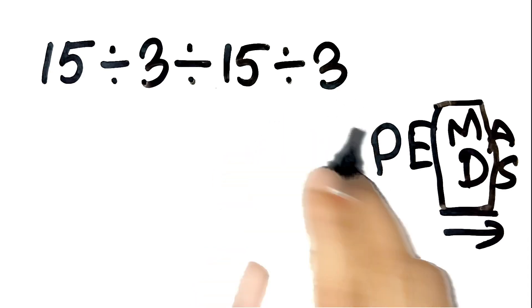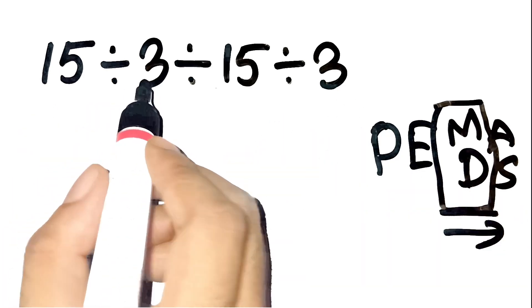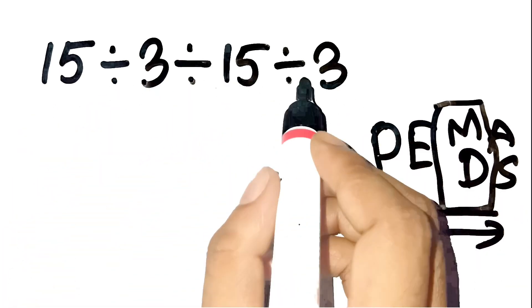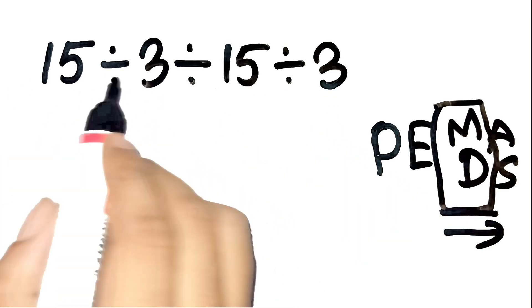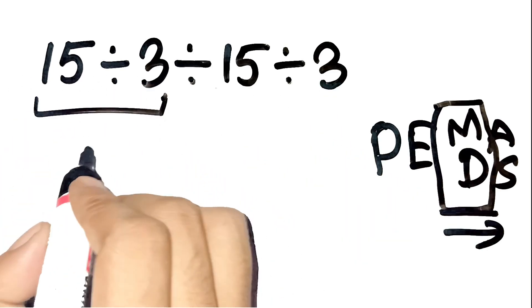Let's redo the problem carefully. 15 divided by 3 divided by 15 divided by 3. First, we start from the left. 15 divided by 3 is 5.